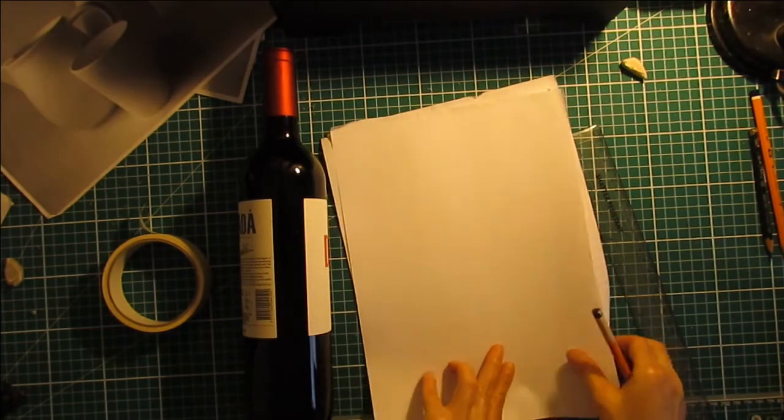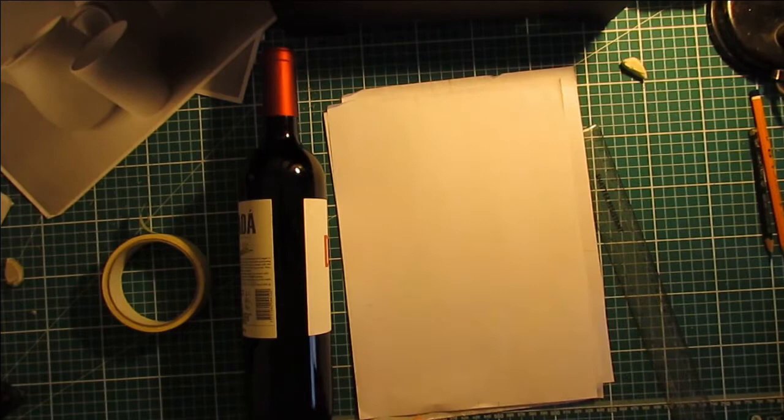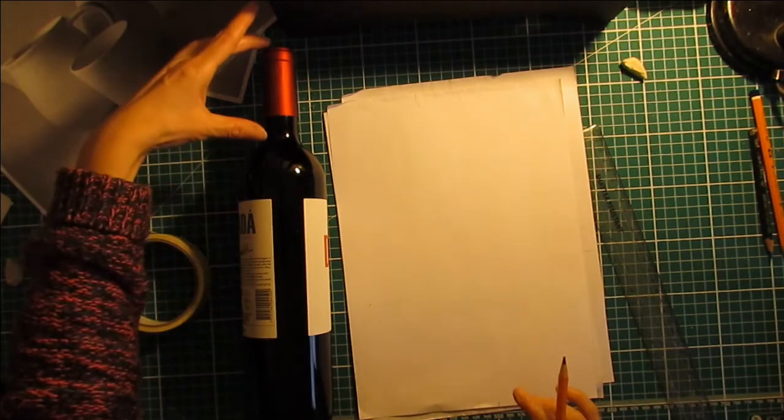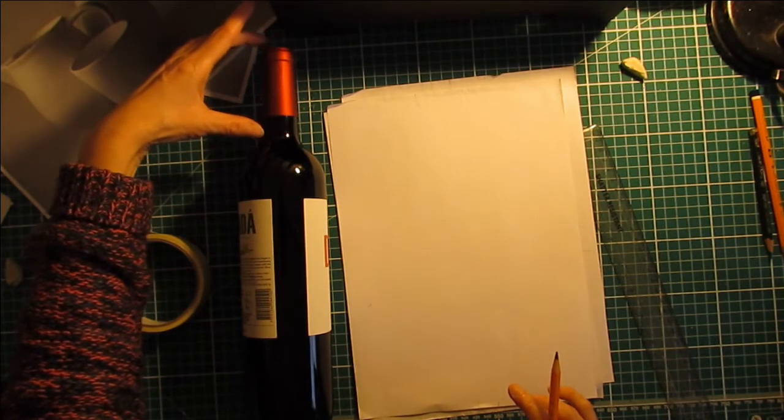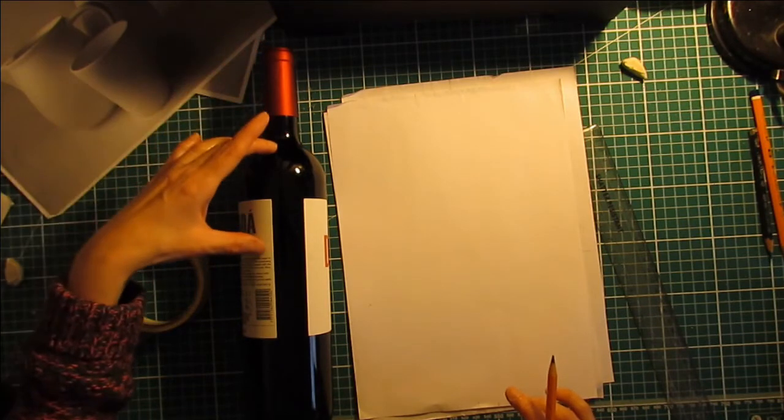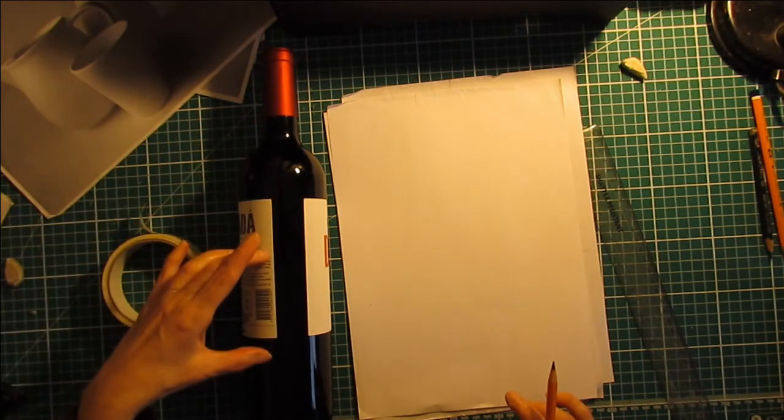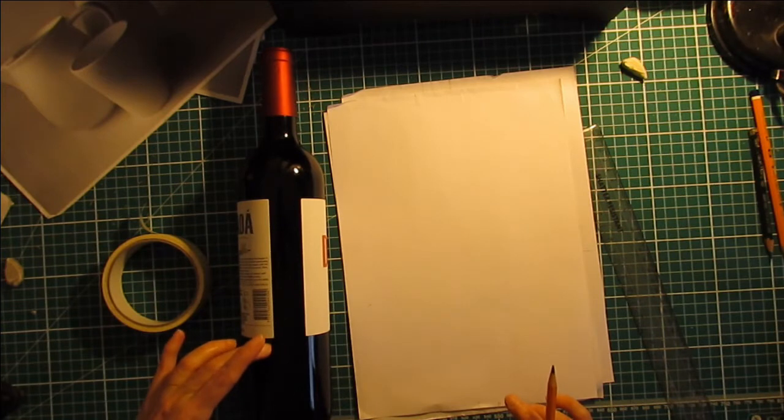So I get myself a piece of paper, and first of all I'm going to take a few measurements. I'm going to check first how many times this little neck would fit into the bottle, so one, two, three.